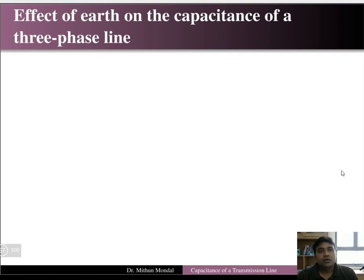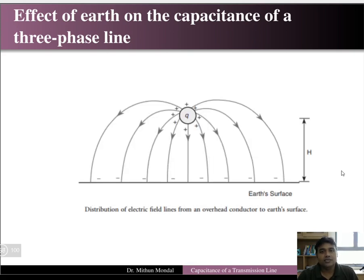The next lecture on electric power systems, lecture number 14, is on the effect of earth on the capacitance of a three-phase line. Last lecture we discussed how to calculate the capacitance of a three-phase line for symmetrical and unsymmetrical spacing, but we did not take the earth into consideration. In this lecture we will consider the effect of earth on the capacitance of a three-phase line.